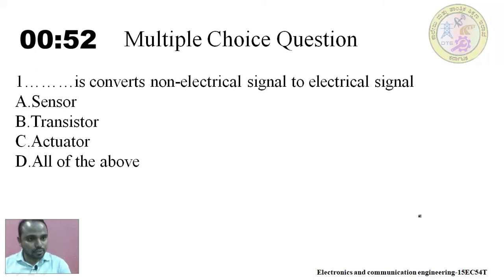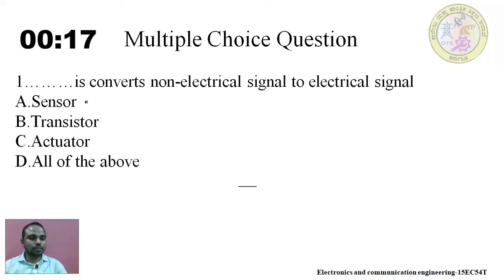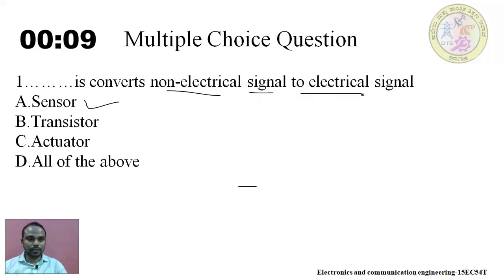Now it's time to answer some MCQs. Question one: dash is used to convert non-electrical signal to electrical signals. Options: sensor, transistor, actuator, or all of the above. The answer is sensor — a sensor is used to convert non-electrical signal to electrical signal.